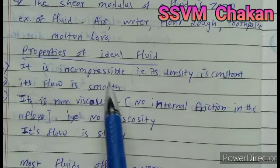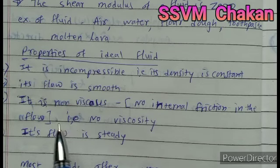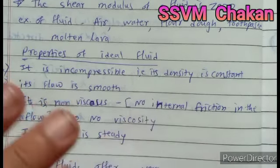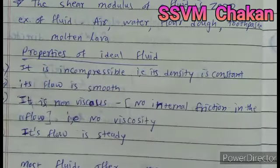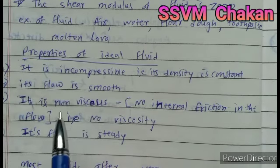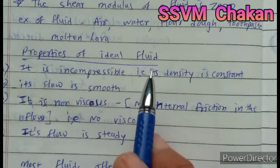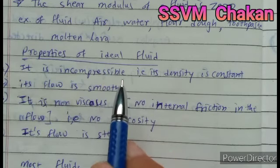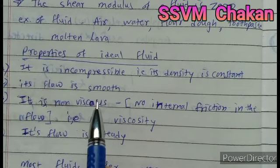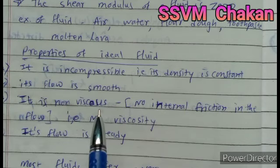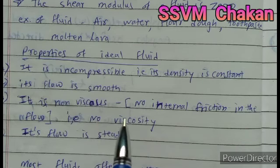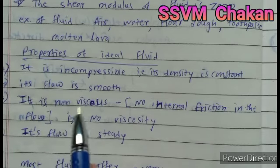This type of fluid is not available in nature. Viscosity is like electrical resistance — electricity flows through a conductor and faces opposition, which we call resistance. Similarly, when liquid is flowing, each layer of liquid opposes the layer above it, and that resistance offered by the fluid is called viscosity. But for ideal fluid, there is no resistance, so no viscosity — it is called non-viscous.